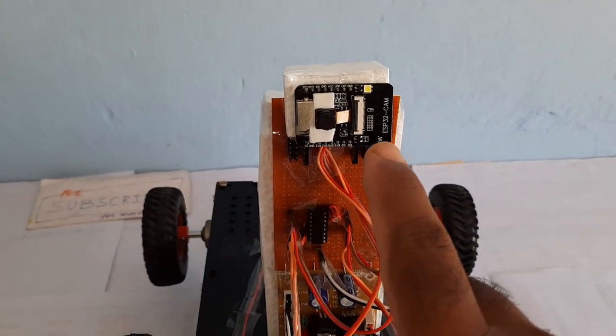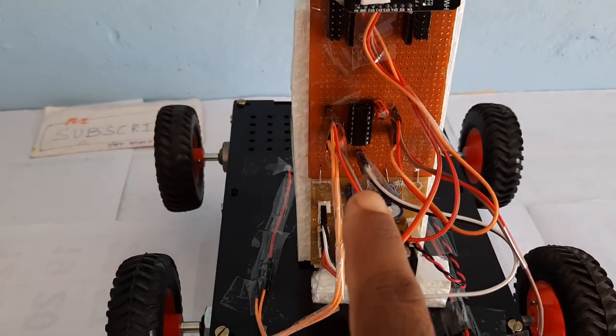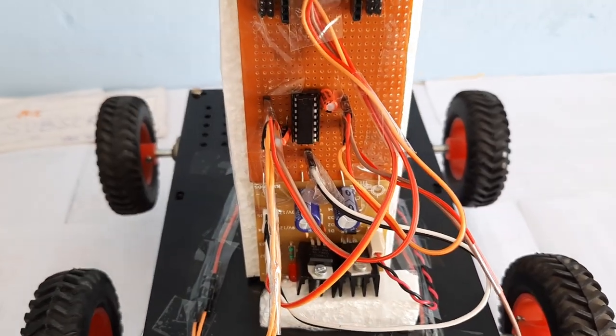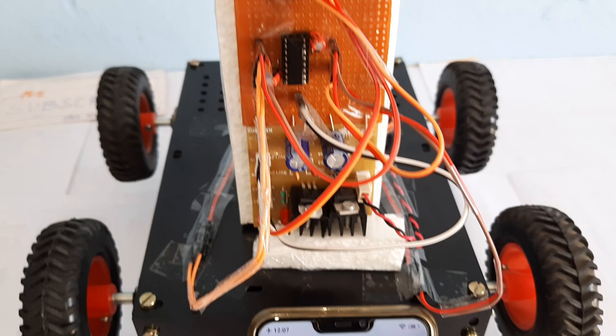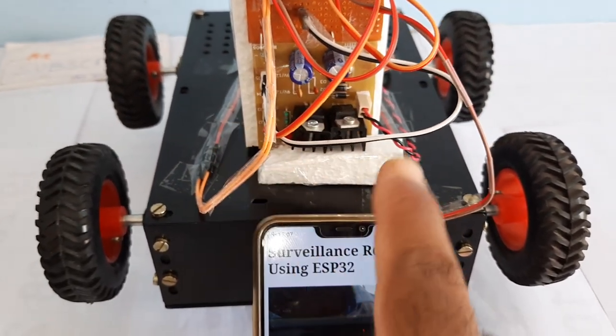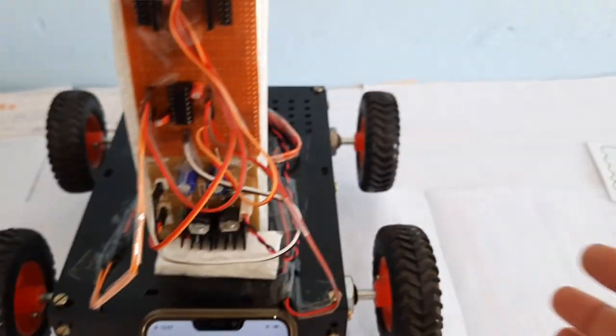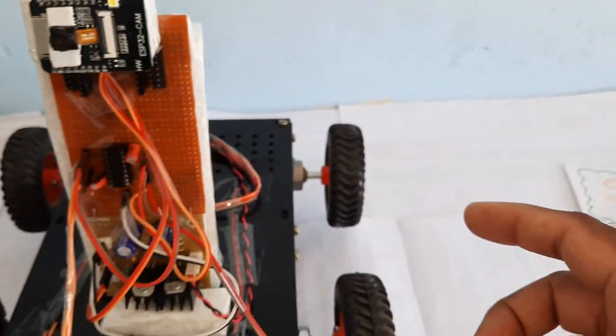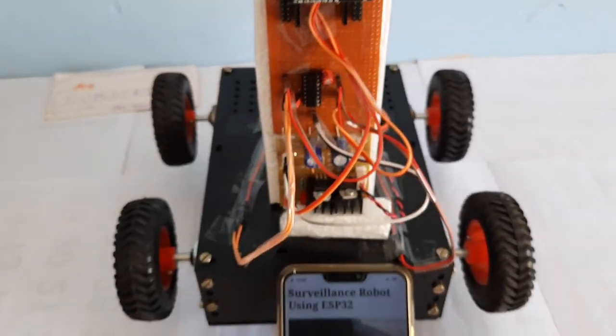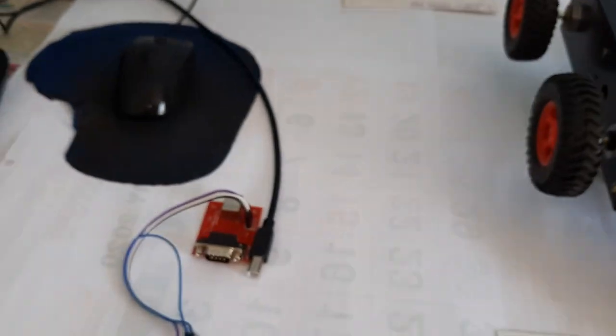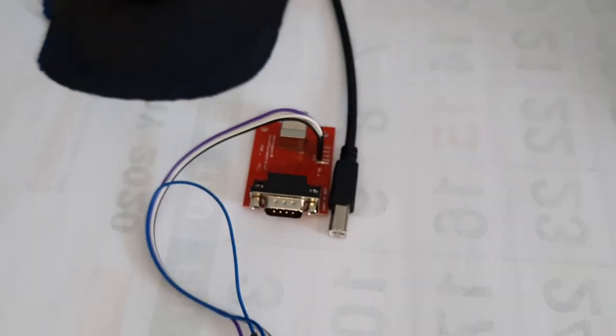ESP32 camera module, L293D driver IC quadruple H-bridge driver IC, 5 volts power supply module, and four motors 300 rpm. We are dumping the program using USB cable.